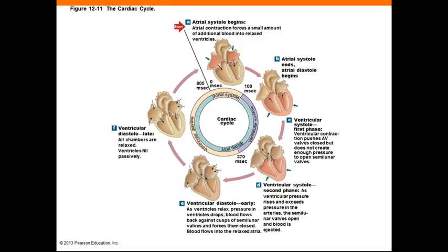The cardiac cycle starts with atrial systole, where the atria contract. The AV valves are open at this point, and there is active ventricular filling. When atrial systole ends, atrial diastole begins, along with the first phase of ventricular systole. At this point, the AV valves shut and the semilunar valves are still closed due to lower arterial pressure, so the volume in the ventricles doesn't change.